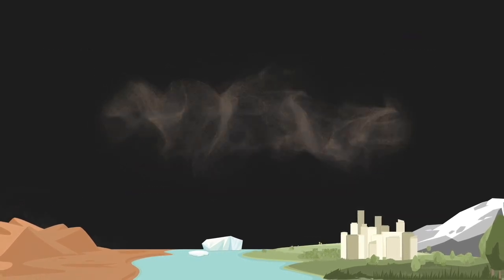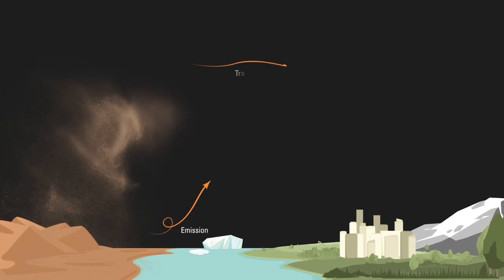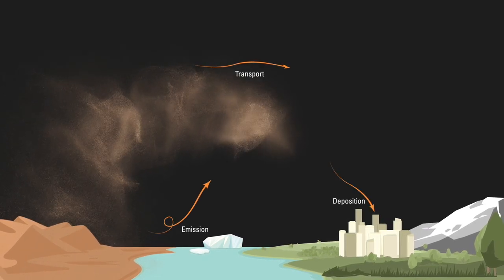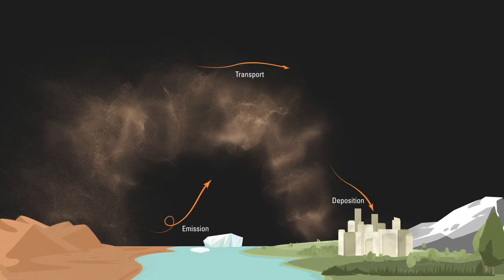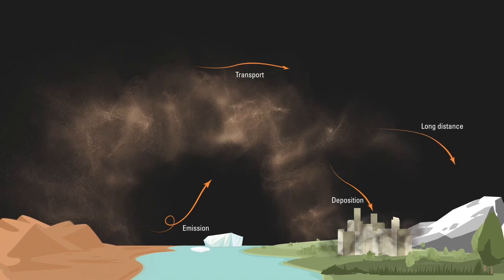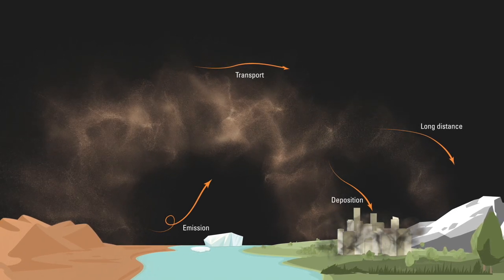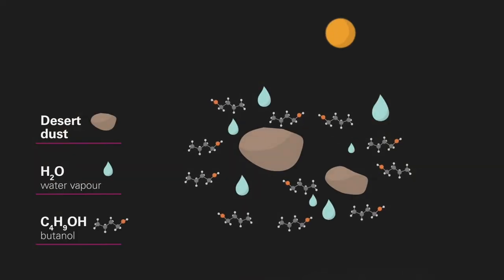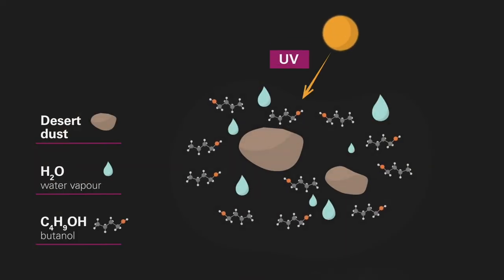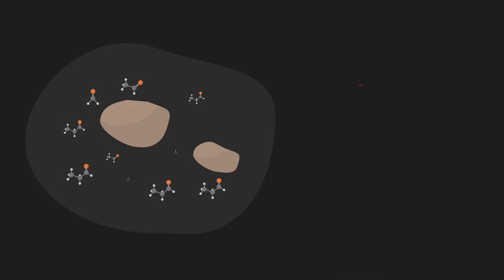The dust cycle includes the emission, transport and deposition of particles. Finer dust particles are transported over long distances. During this transport, dust can change the chemical composition of the air we breathe.